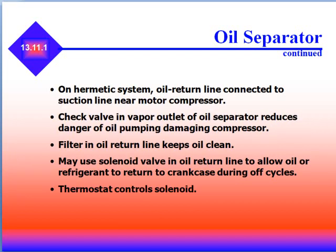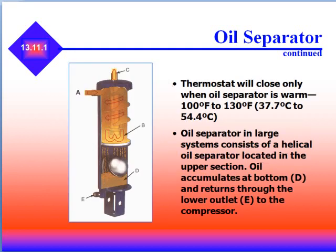On hermetic systems, the oil return line connects to the suction line near the motor compressor. There's a check valve in the vapor outlet of the oil separator which reduces the danger of oil pumping and damaging the compressor. A filter in the oil return line keeps the oil clean. It may use a solenoid valve in the oil return line to allow oil or refrigerant to return to the crankcase during off cycles. The thermostat controls the solenoid and will close only when the oil separator is warm, usually between 100 and 130 degrees.